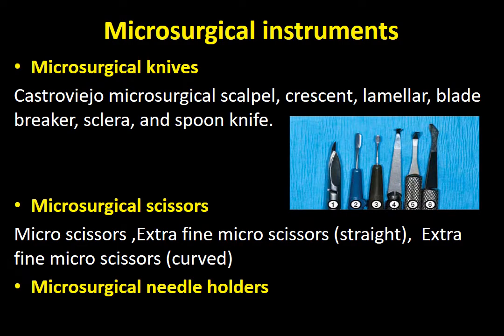Moving to microsurgical instruments — this is a common exam question. Unlike regular periodontal surgery, there are various microsurgical instruments: knives, scissors, needle holders, needles, and sutures — essentially miniature versions of regular surgical instruments. The microsurgical knives include the Castroviejo microsurgical scalpel, razor, lamellar blade, beak type, scleral, and spoon knife.